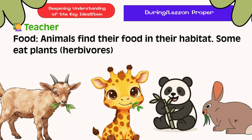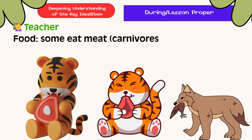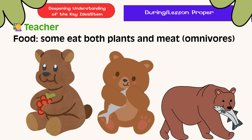Here are examples of animals that are herbivores. Some eat meat — they are carnivores. Some eat both plants and meat — they are omnivores.